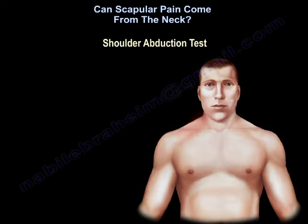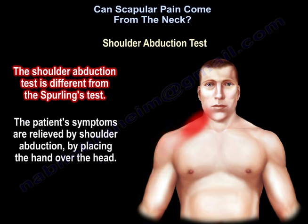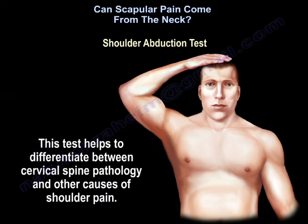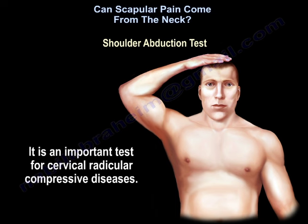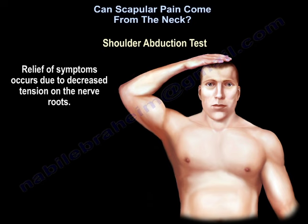The shoulder abduction test is different. The patient's symptoms are relieved by shoulder abduction by placing the hand over the head. This test helps to differentiate between cervical spine pathology and other causes of shoulder pain. It is an important test for cervical radicular compressive disease.